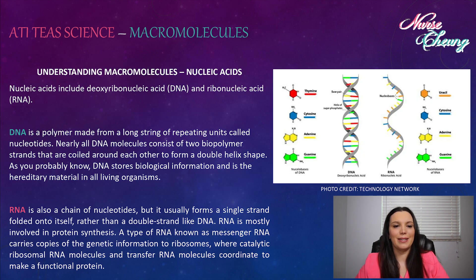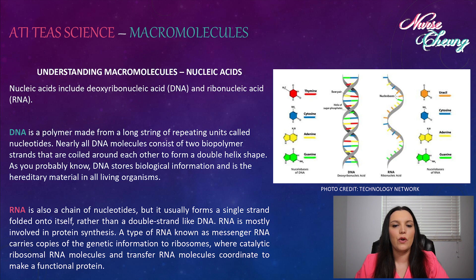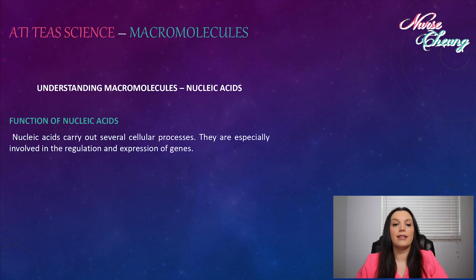Lastly, we're going to discuss nucleic acids. Nucleic acids include deoxyribonucleic acid, DNA, or ribonucleic acid, RNA. DNA is a polymer made up of a long string of repeated units called nucleotides. Nearly all DNA molecules consist of two biopolymer strands coiled together to form a double helix shape. DNA stores biological information and is the hereditary material of all living things. RNA is also a chain of nucleotides, but it forms in a single strand folded onto itself rather than a double strand like DNA. RNA is mostly involved in protein synthesis. Messenger RNA carries copies of genetic information to ribosomes, where catalytic ribosomal RNA molecules and transfer RNA molecules coordinate to make a functional protein. Nucleic acids carry out several cellular processes and are especially involved in the regulation and expression of genes.